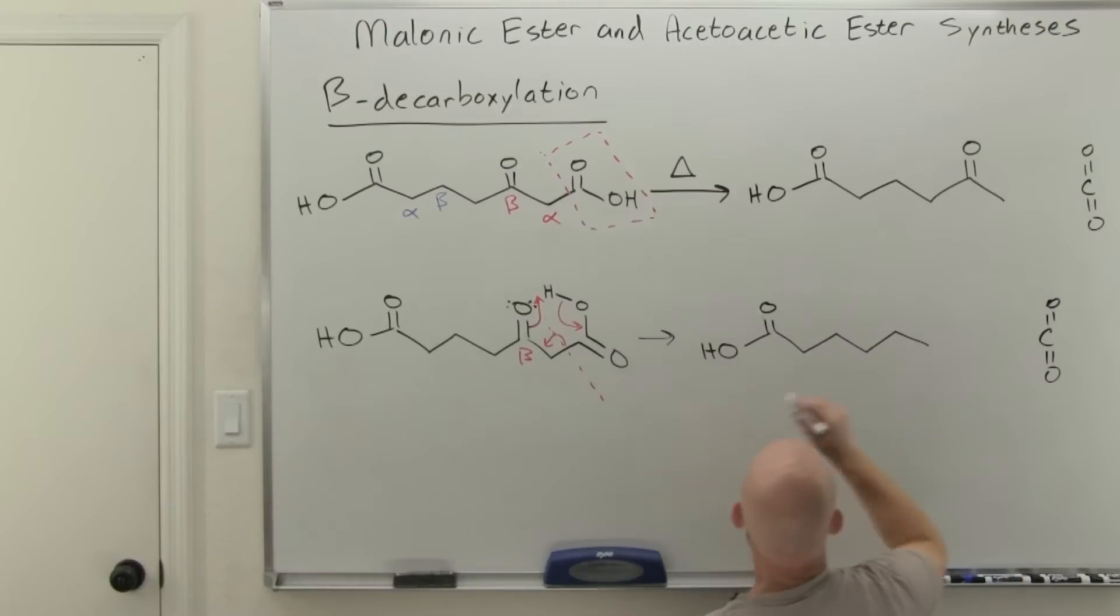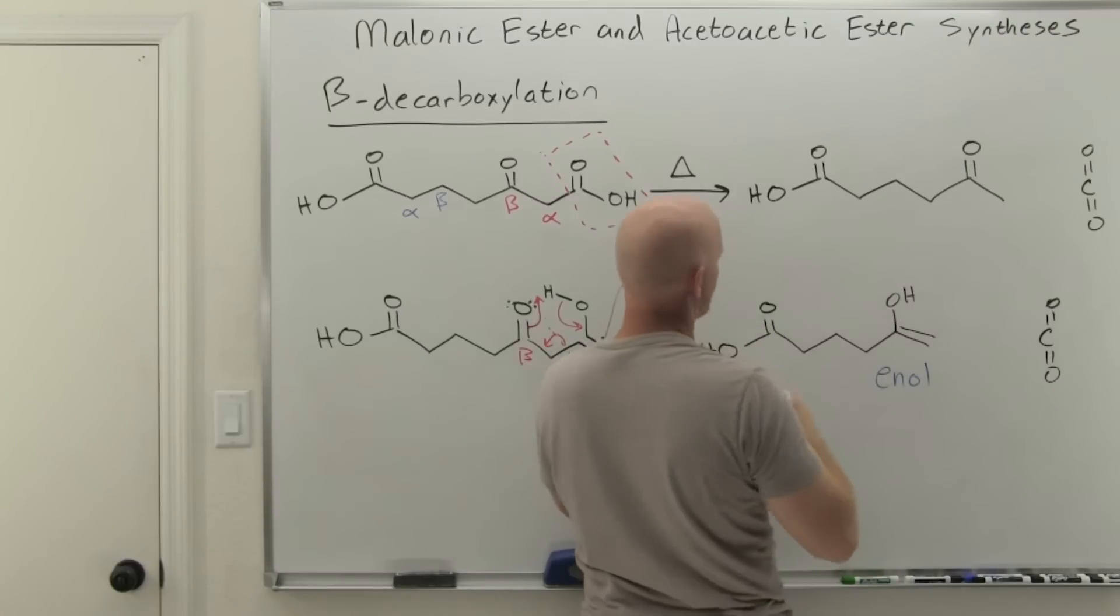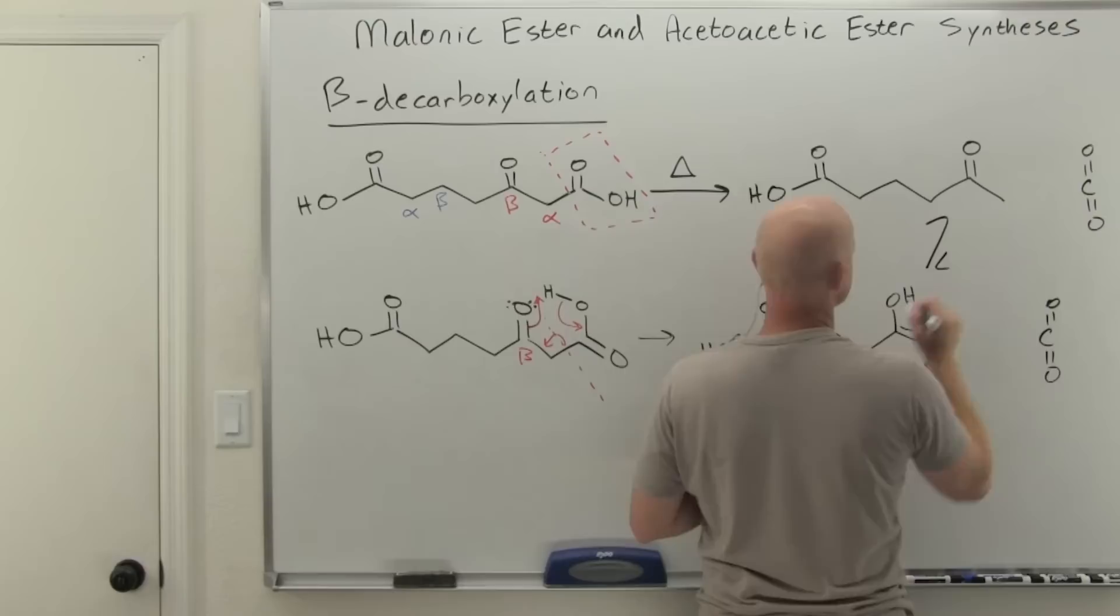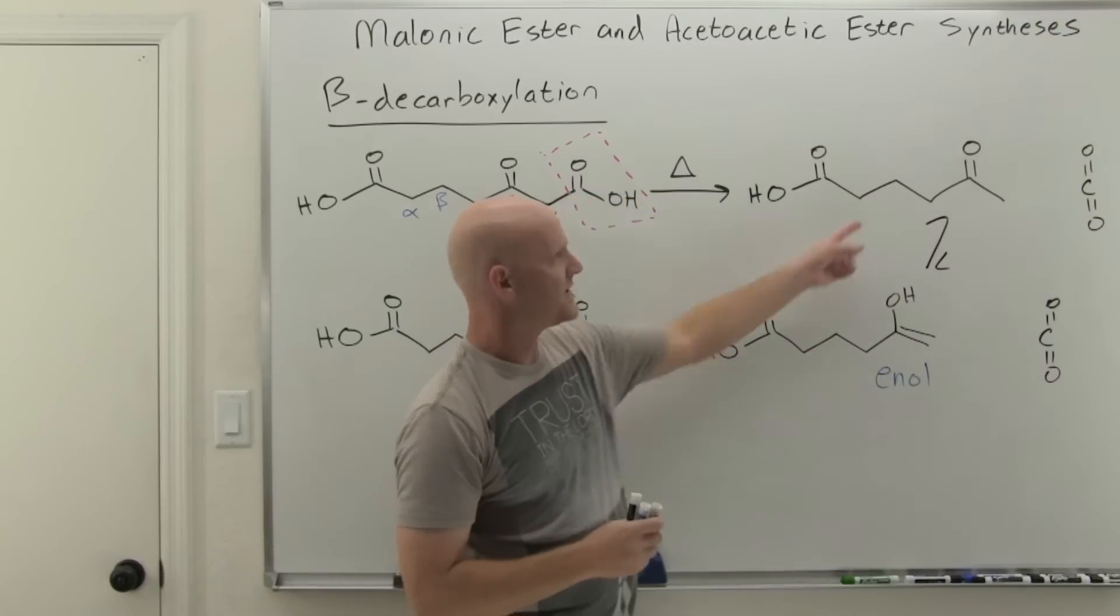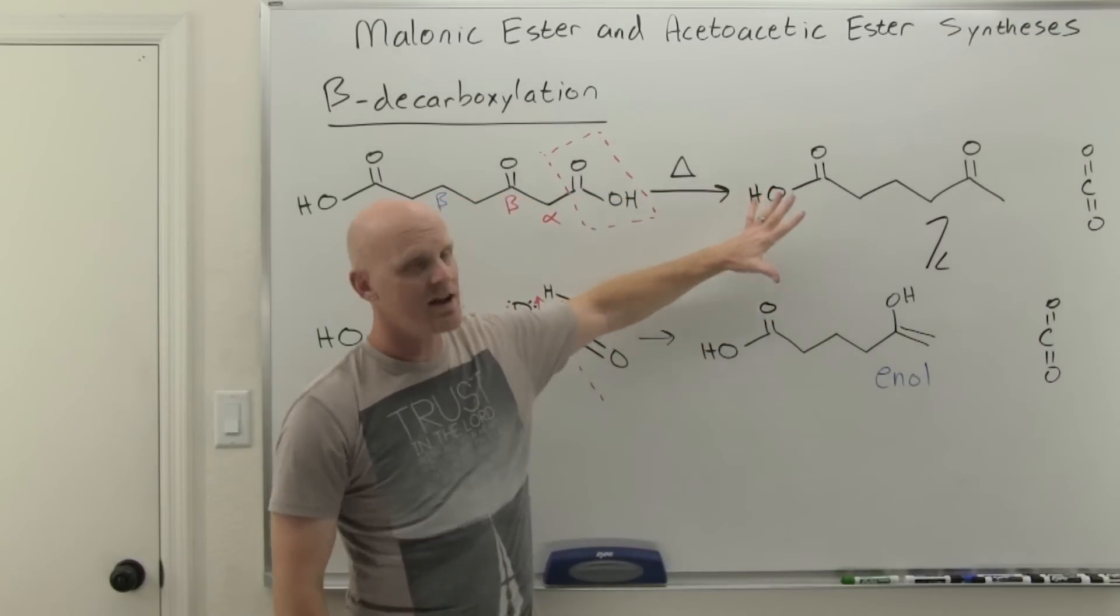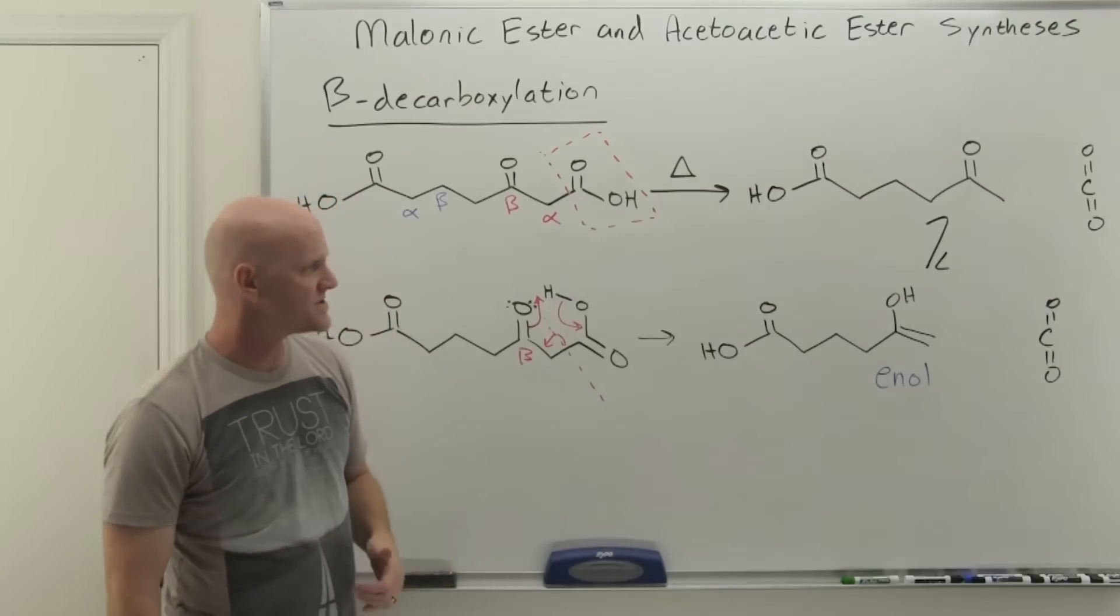Also notice that we formed an OH here and an alkene here. And if you notice this guy right here is an enol. And that enol is simply going to tautomerize to the more stable keto form, your final product right here. And so that's the general mechanism of beta decarboxylation.